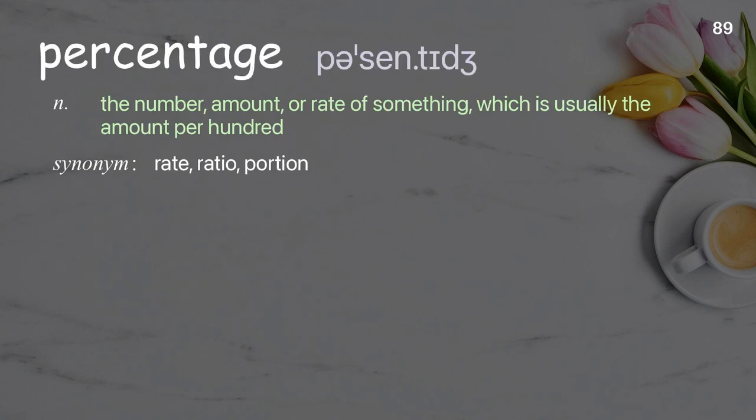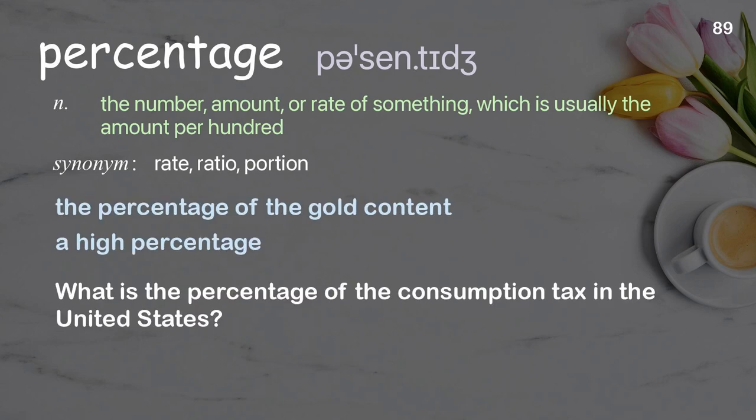Percentage: the number, amount, or rate of something, which is usually the amount per hundred. Examples: the percentage of the gold content, a high percentage. What is the percentage of the consumption tax in the United States?